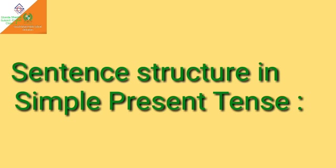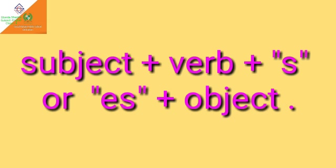Look at the sentence structure in simple present tense. To make a sentence in simple present tense, you have to follow this sentence structure: Subject + Verb (s or es) + Object.